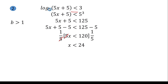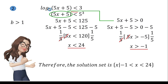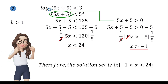Since we need to create a boundary, we already have x < 24. To find the other boundary, take the expression inside the logarithm and set it greater than 0: 5x + 5 > 0. Apply APE, then MPE: x > −1. Therefore, the solution set is x such that x > −1 but x < 24.